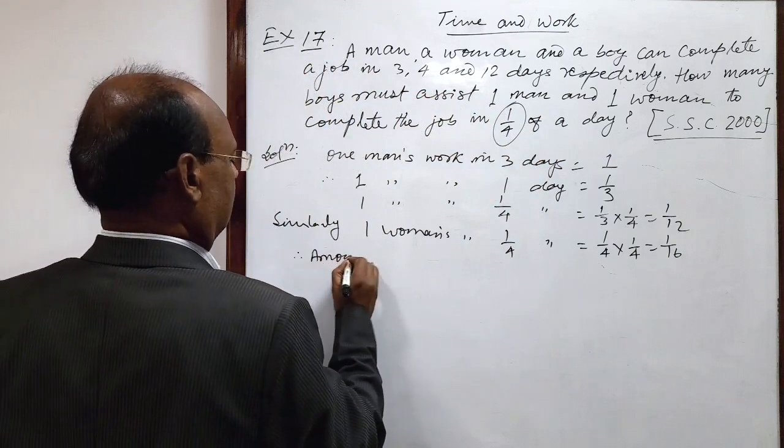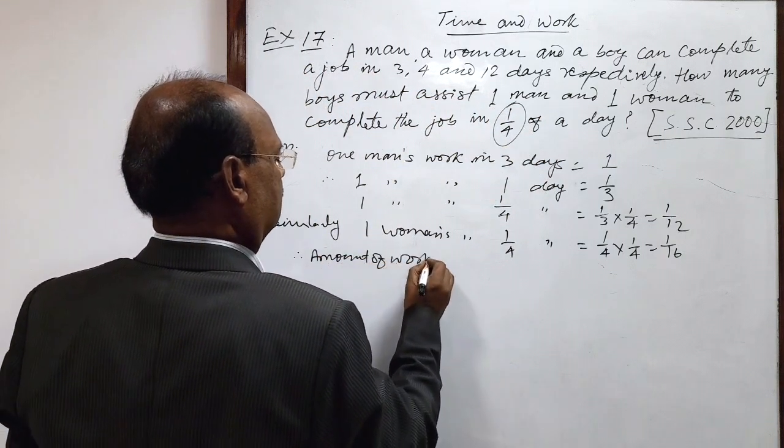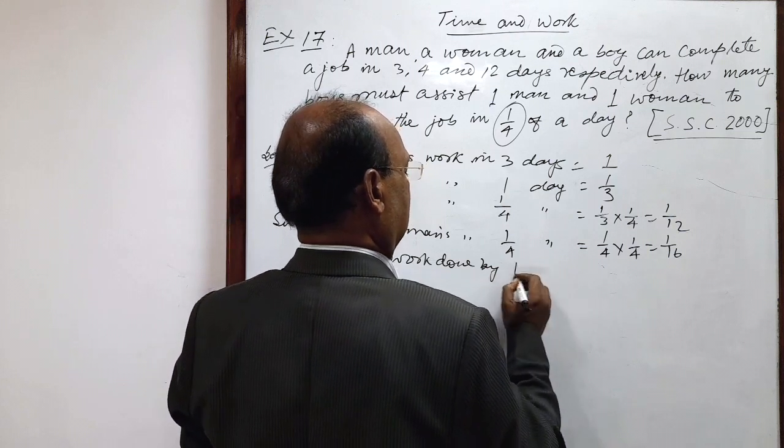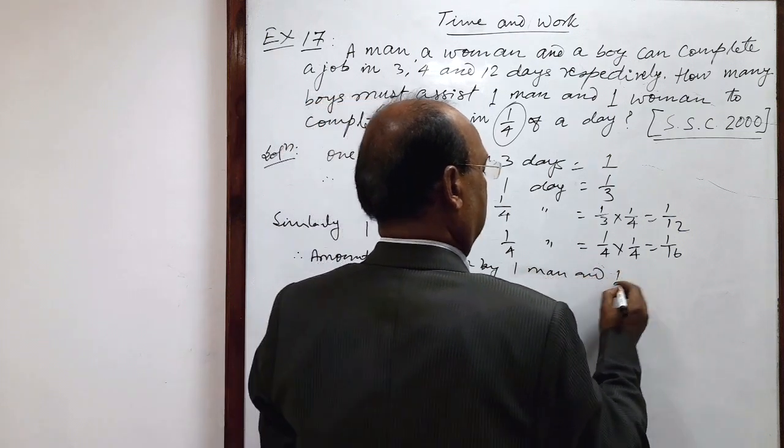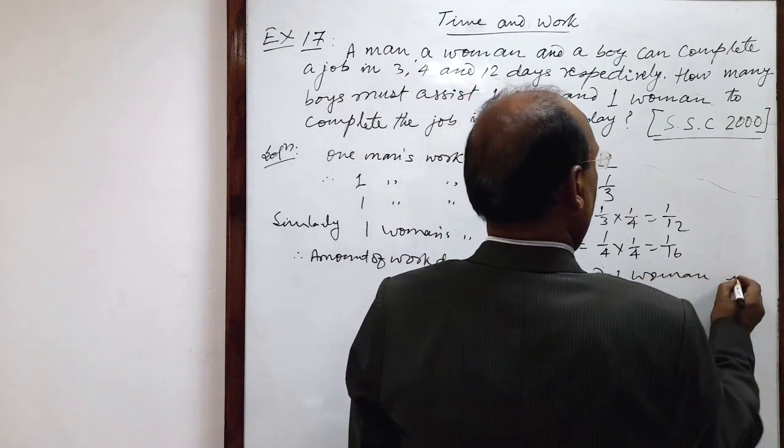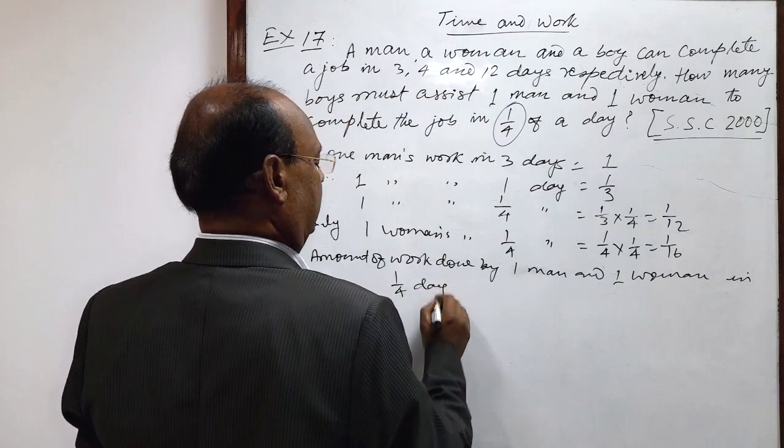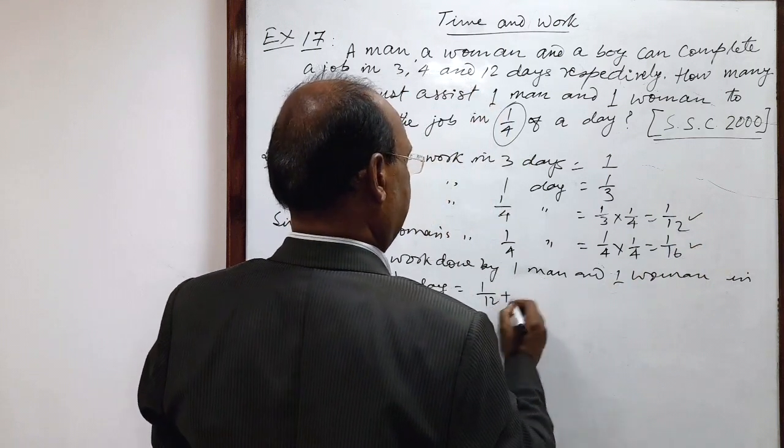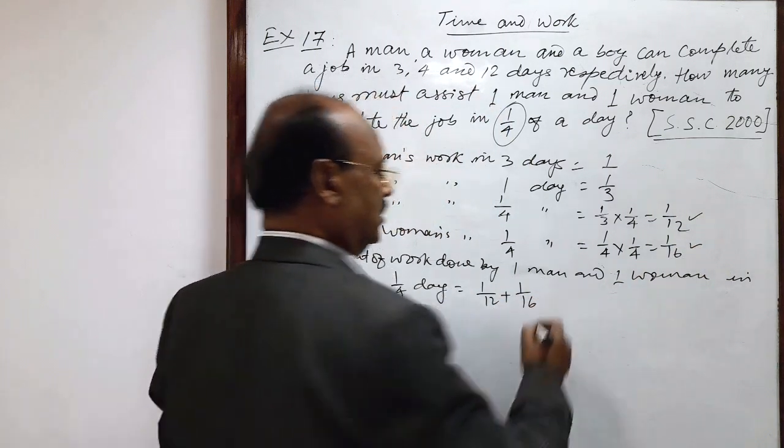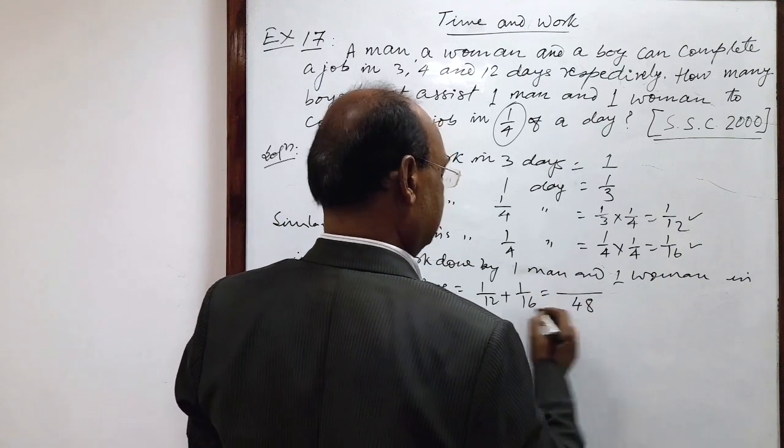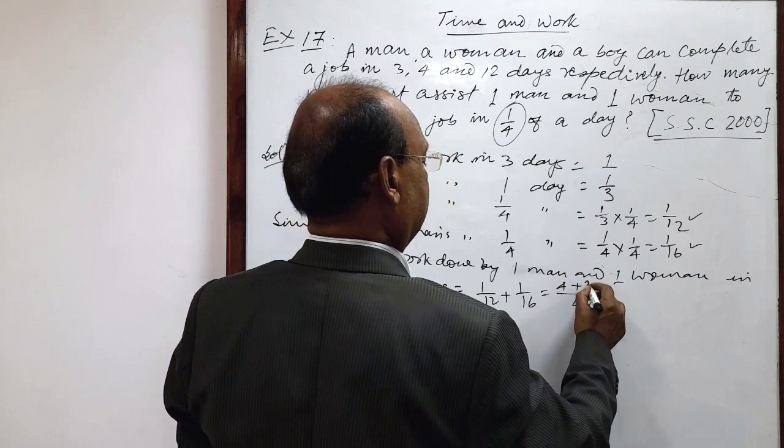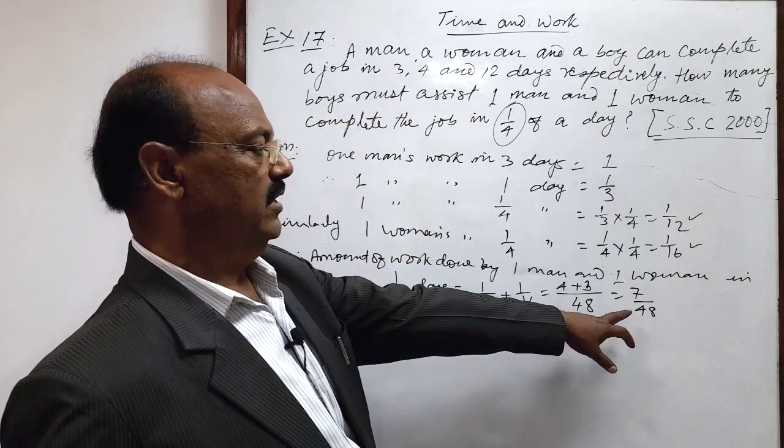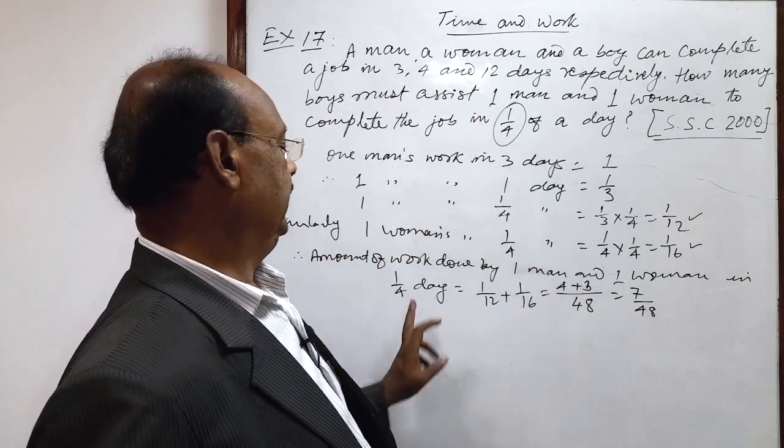So therefore, amount of work done by 1 man and 1 woman in 1 by 4 day is equal to how much? Sum of these two numbers, so this is 1 by 12 plus 1 by 16. Let us find the sum, LCM will be 48, 12 four-ja 48, 16 three-ja 48, this is equal to 7 by 48 part of 1 work has been completed by 1 man and 1 woman in 1 by 4 day.